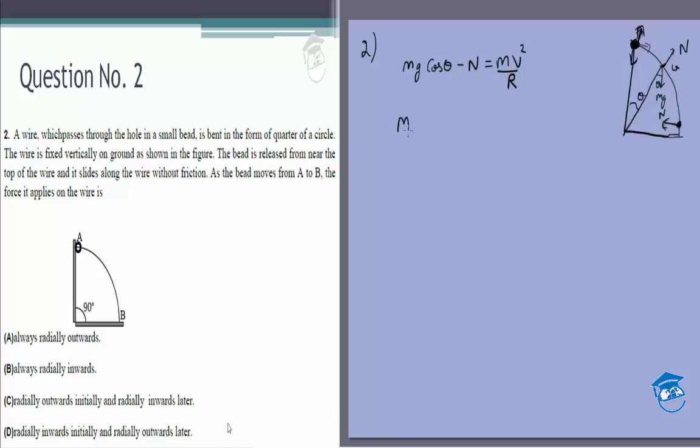The work done by gravity will be mgr times 1 minus cos theta, because initially it is at a height r, then this is r cos theta, so what is left is r into 1 minus cos theta, which is equal to half mv squared.